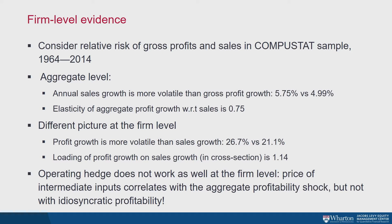Now we move from BEA numbers to Compustat, looking at publicly traded firms over a shorter sample. At the aggregate level, profit growth is less volatile than sales growth — so there is some hedging going on. The elasticity of aggregate profit growth with respect to sales is 75 percent, showing evidence of operating hedge at the aggregate level when we sum cash flows across firms. These numbers are somewhat different from the previous ones because we're summing across publicly traded firms rather than the entire BEA economy.